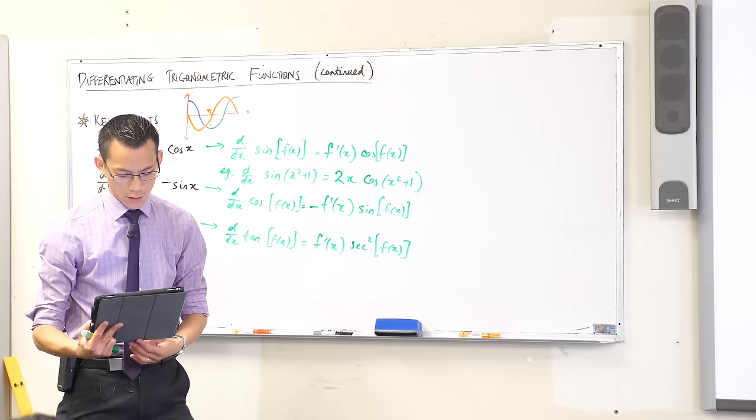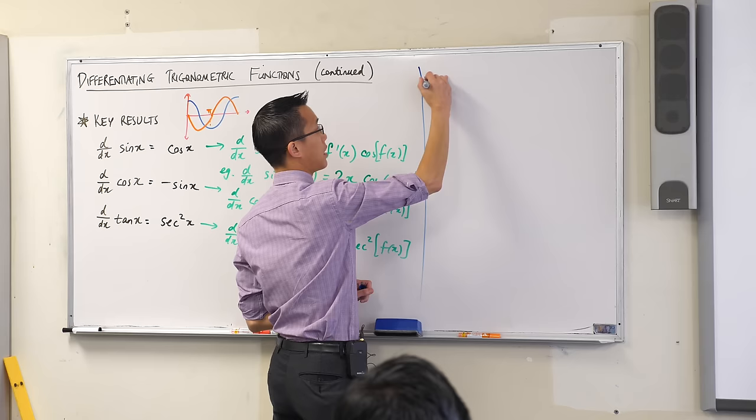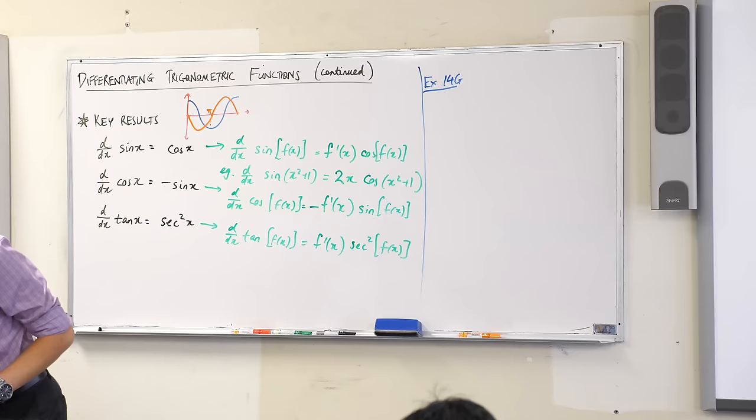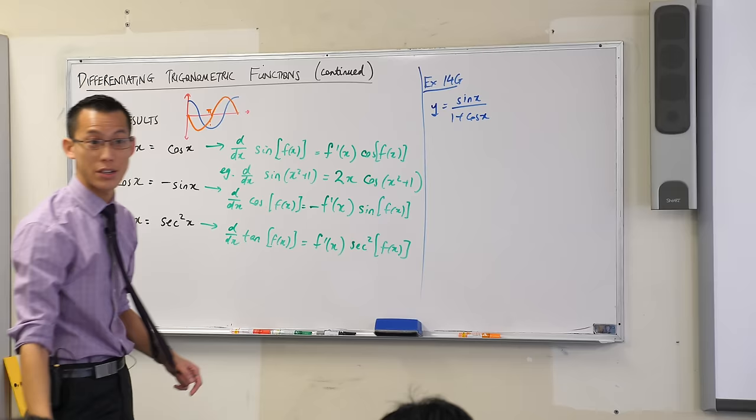Let's have a look at say 3J. Do you see 3J? This is exercise 14G. For those of you who weren't here yesterday, it's the prelim book. 3J says y equals sine x over 1 plus cos x. Did I remember that right? Yeah, that's 3J.